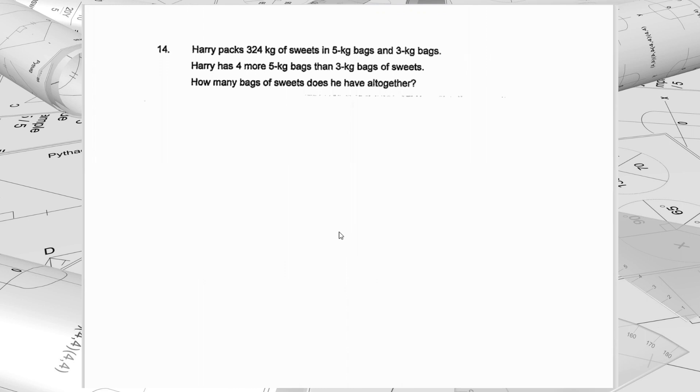So when we read the question, there's actually extra 4 5kg bags, right? So let's get rid of those first. The extra 4 bags of 5 kg. So 4 times 5 kg, that is 20 kg.